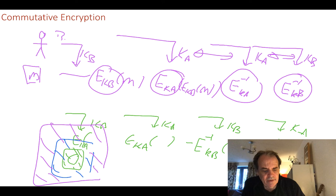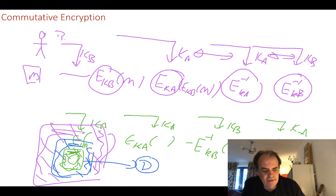This creates an onion effect. Normally on something like Tor routing, the keys would have to come off in reverse — the purple key first, then the blue key, then the green key. But with commutative encryption we can take the keys off in any order: we could take the green key off first, then the purple key, then the blue key, and end up with our data back again.